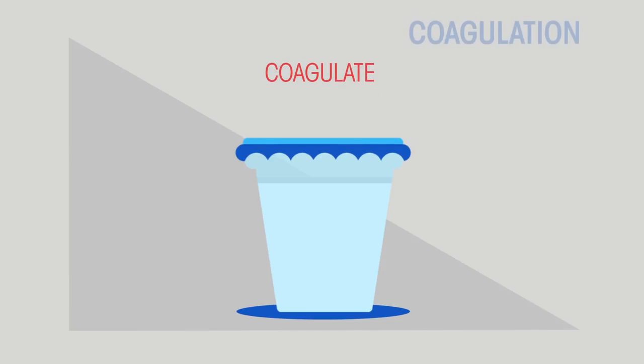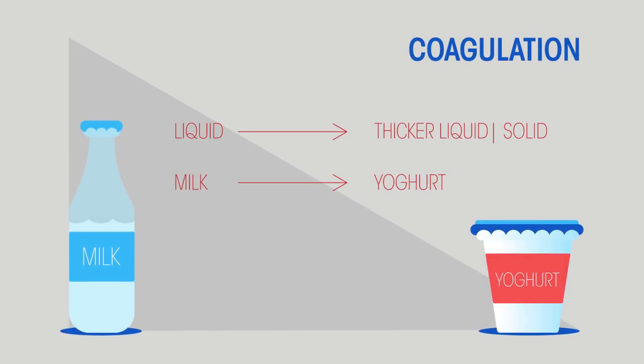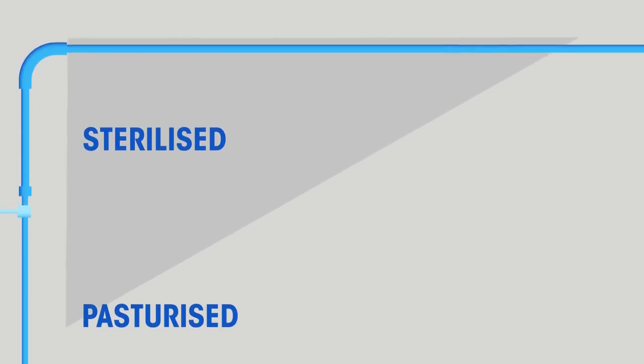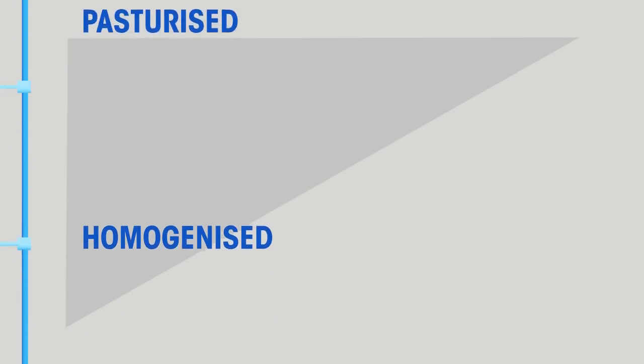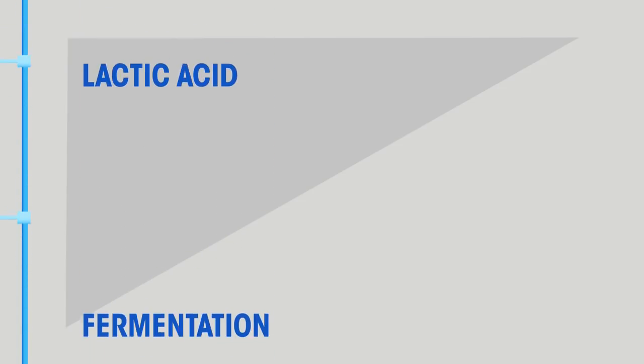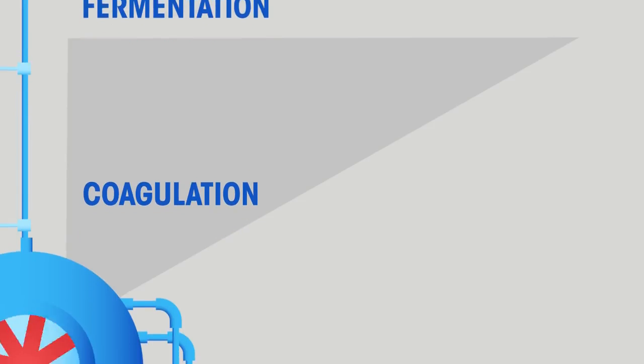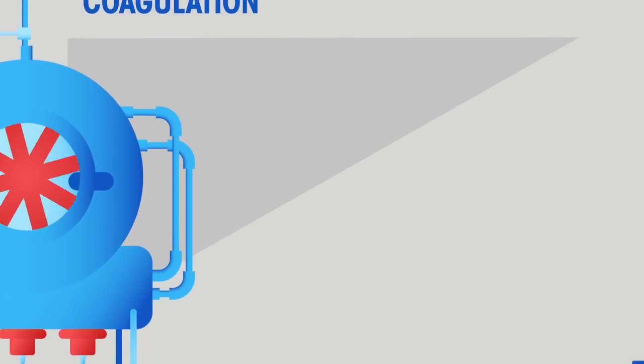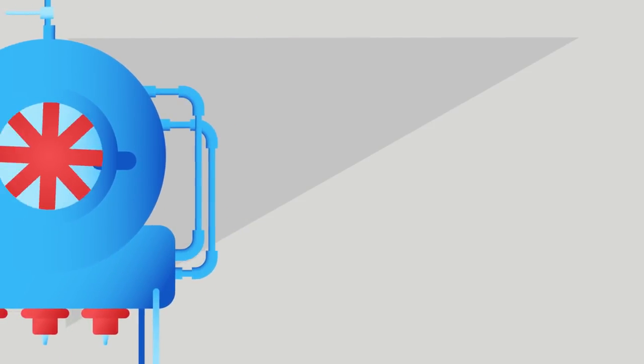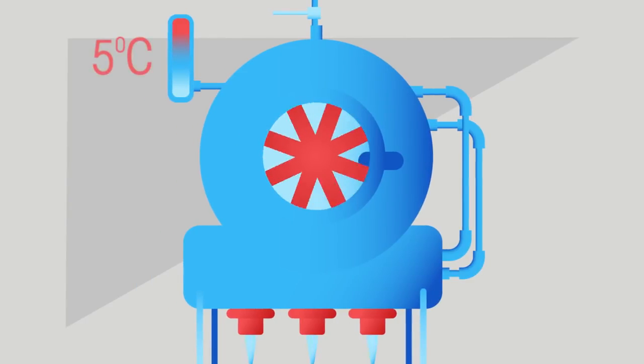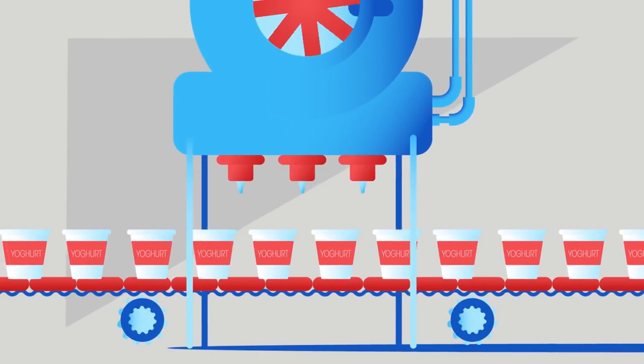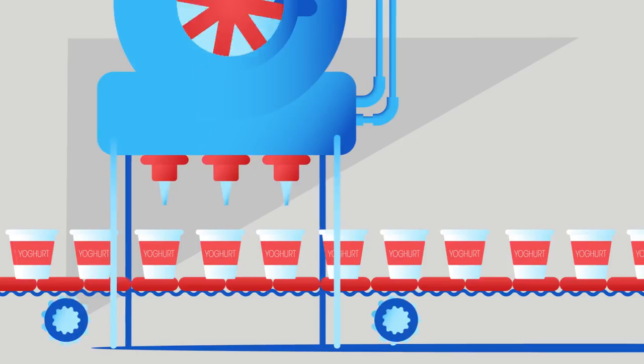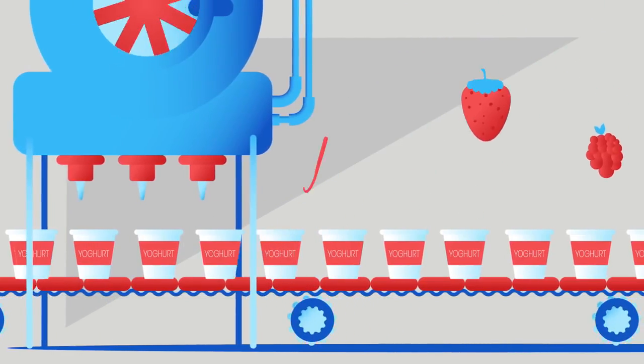So we've sterilized our equipment, then pasteurized and homogenized the milk, added lactic acid bacteria so fermentation happens, and then coagulation. The mixture is now stirred and cooled to 5 degrees Celsius, and we've made natural unflavored yogurt. At this stage, we can add flavorings and fruit. Now it's ready to be packaged and sold. Delicious!